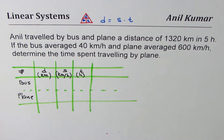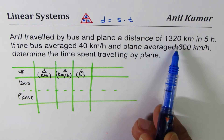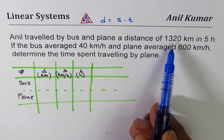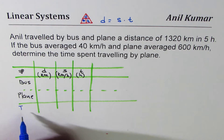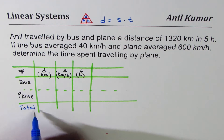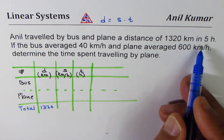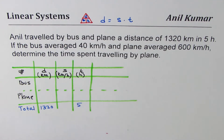Now we can fill in all the required values which are given to us. Anil traveled by bus and plane a total distance of 1320 kilometers — that goes in the total row. In five hours — that is the total time.